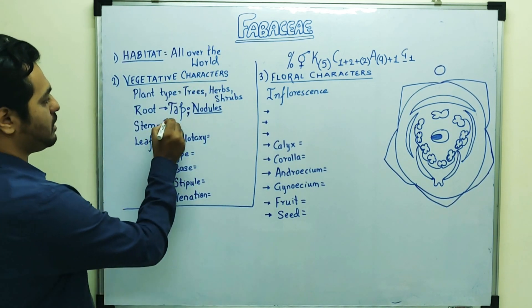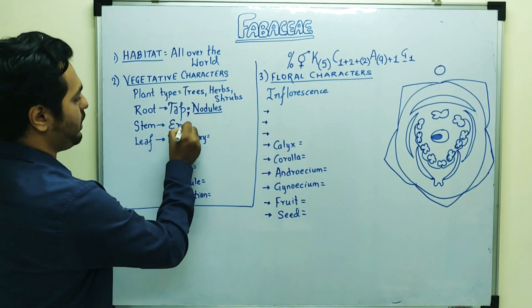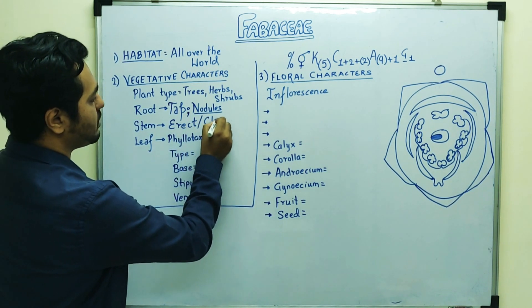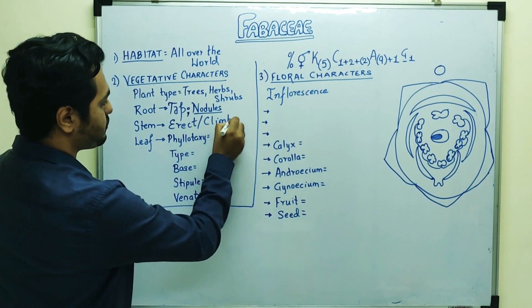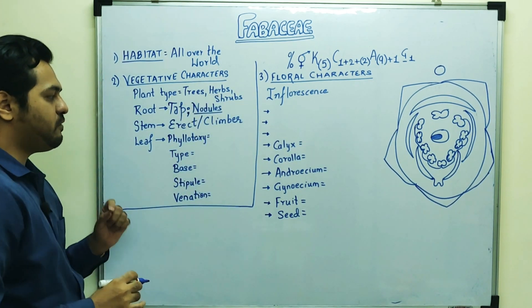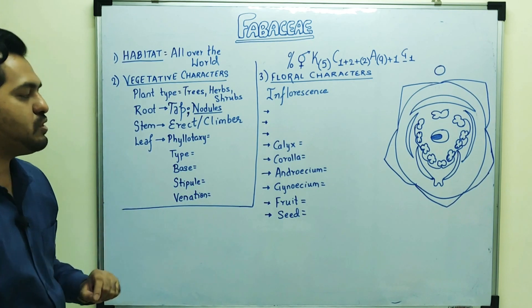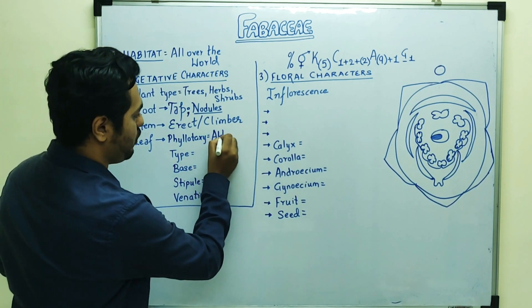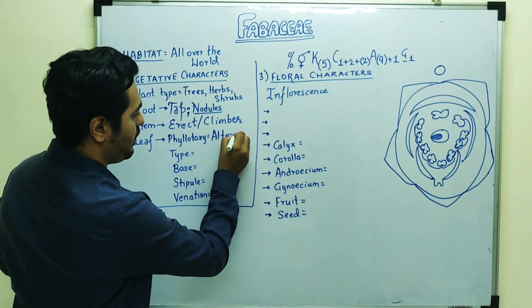The stem is either erect or present as a climber. The leaf arrangement shows alternate phyllotaxis. Three major types of phyllotaxis have been discussed in a separate video.